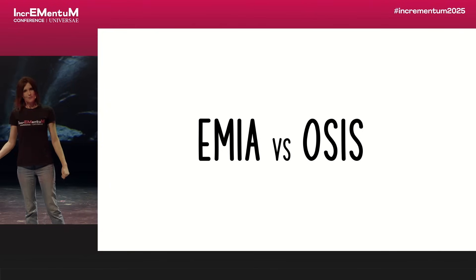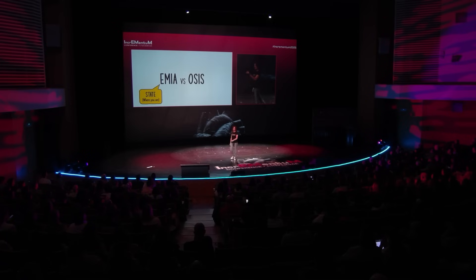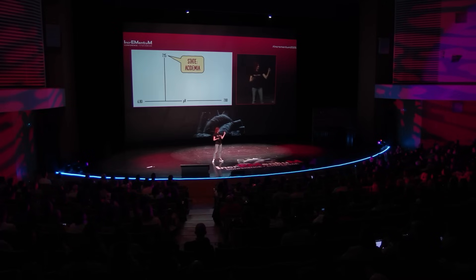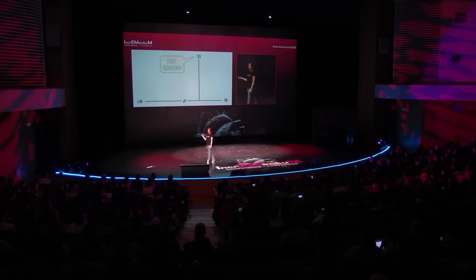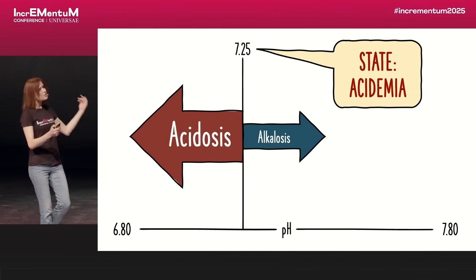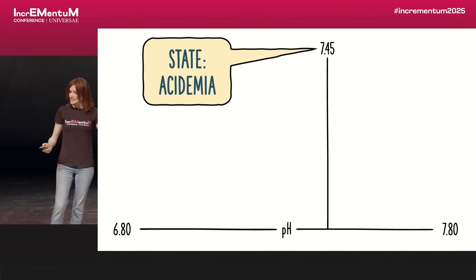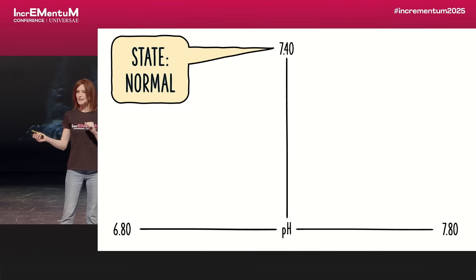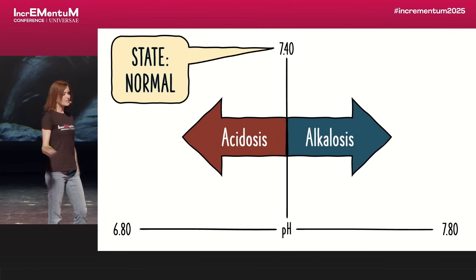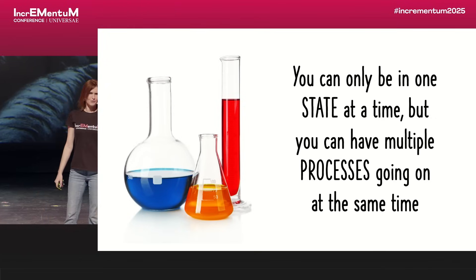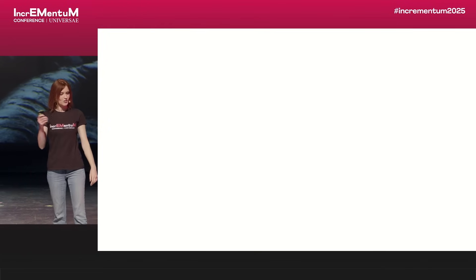Fortunately, the emia versus osis distinction is easy. An emia is a state of being — where you are at. An osis is simply a process — how you got there. In acid-base, you can be in a state of acidemia; how you got there is an acidosis. You can also be in a state of acidemia where you got there with an acidosis, but you have a simultaneous alkalosis going on. You can even have a normal pH of 7.4, not because everything underlying is normal, but because two competing processes are occurring simultaneously. You can only be in one state at a time, but you can have as many processes ongoing underlying that state as you want.